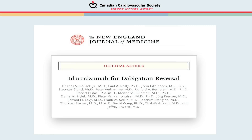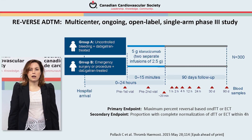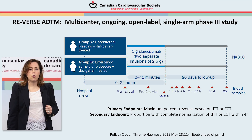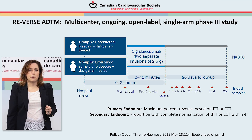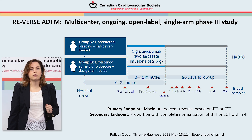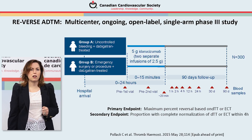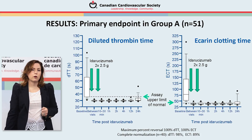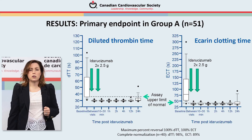The data on which the current guidelines are underpinned is from the REVERSE-AD trial. The REVERSE-AD trial was a multi-center, open-label, single-arm study that's still ongoing, where dabigatran-treated patients who either had uncontrolled bleeding — Group A — or those who required an emergency surgical procedure or intervention — Group B — received idarucizumab. The primary efficacy endpoint was maximum percent reversal based on coagulation parameters indicative of dabigatran's effect, namely the dilute thrombin time and the ecarin clotting time. The investigators also looked at the proportion of patients with complete normalization of these parameters within four hours. Patients eligible for the primary efficacy endpoint were those who actually had elevated dilute thrombin time or ecarin clotting time at enrollment.